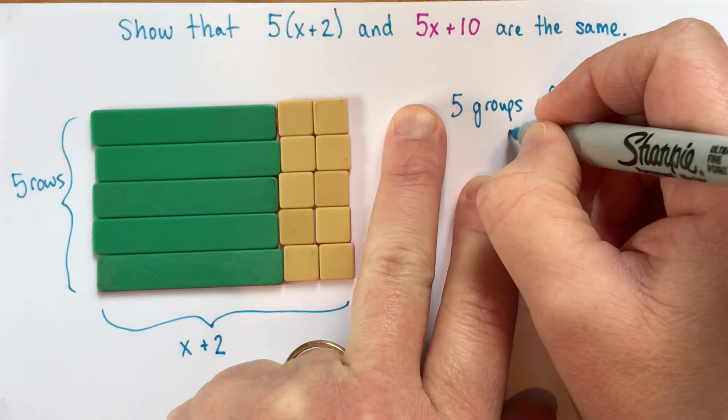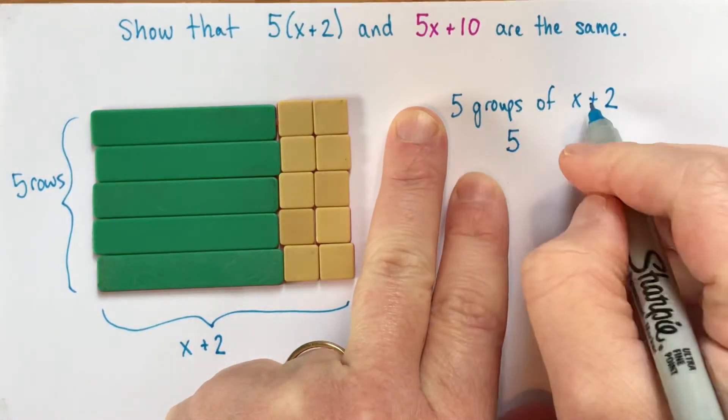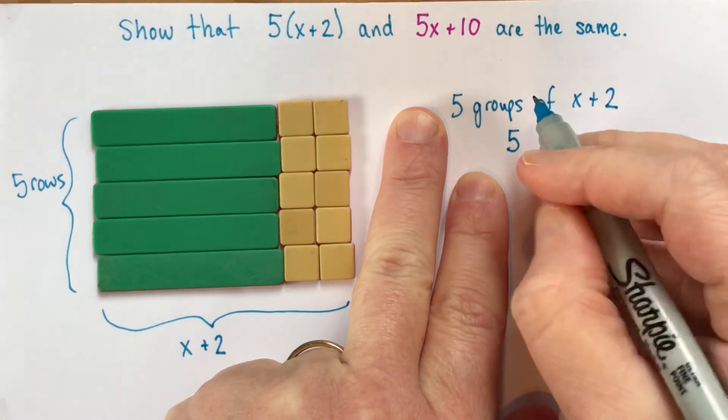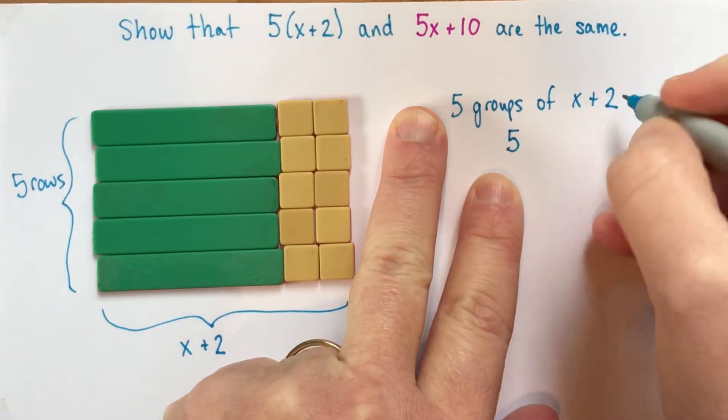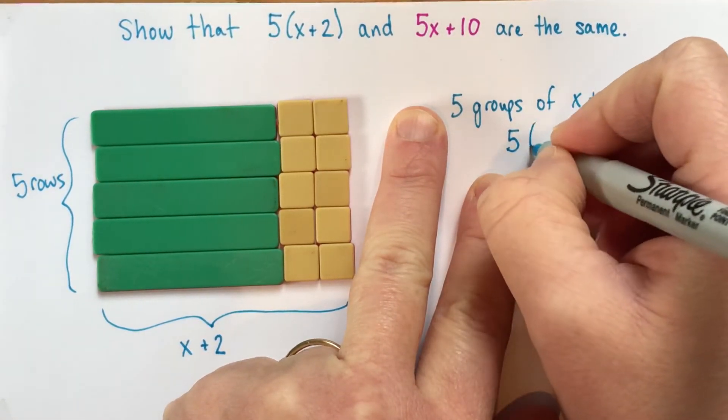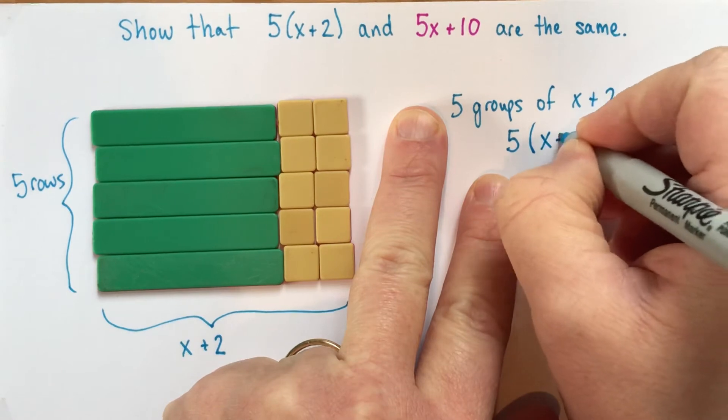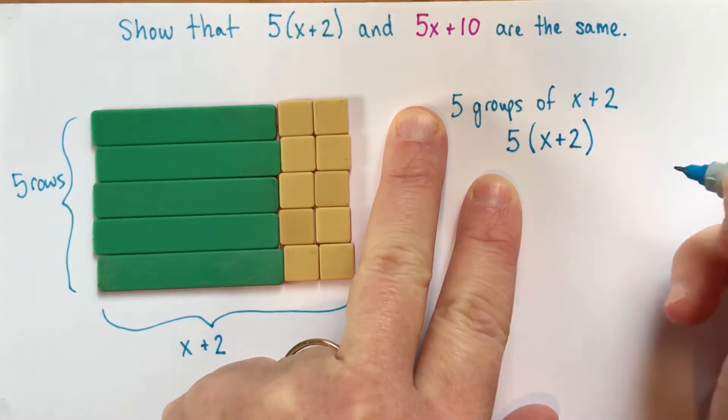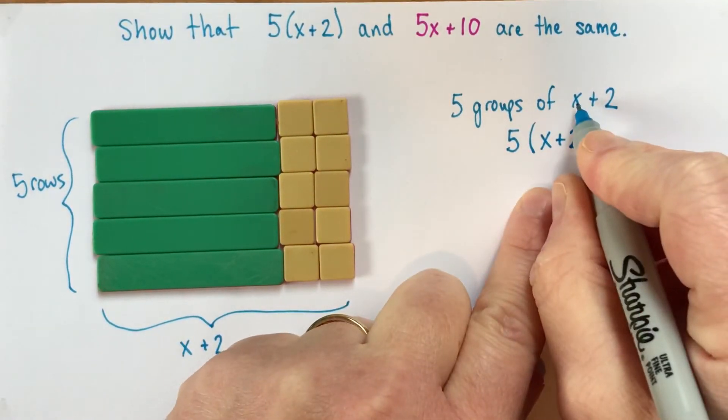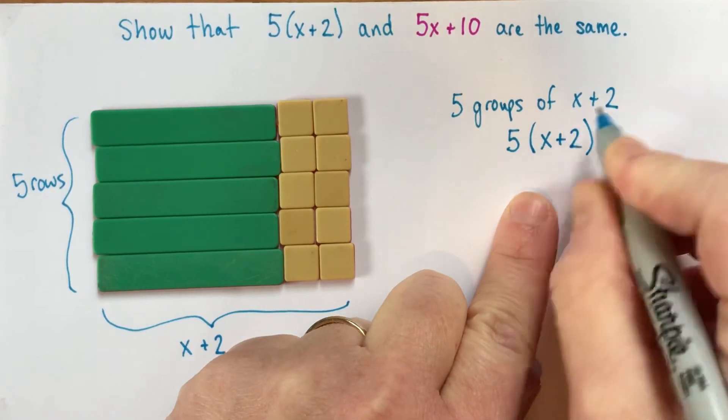And another way of writing that, if we have 5 groups of 6, we could say that that was 5 times 6 altogether. 5 groups of x plus 2 is 5 times x plus 2 altogether. So we have to write the x plus 2 in brackets to show that x plus 2 is what's in each group.